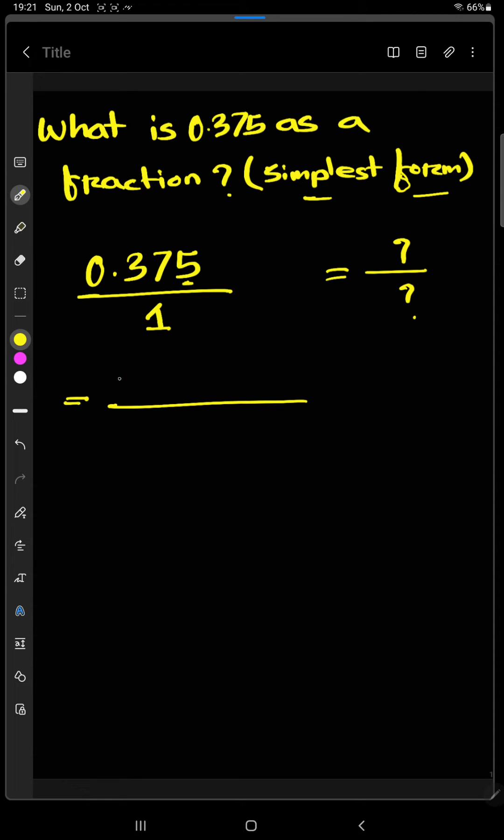So we have to multiply both numerator and the denominator with 1000. Let's write down 0.375 times 1000 and 1 into 1000, so we'll find out 375 by 1000.